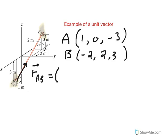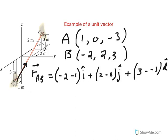Remember, B is the final, A is initial. So that would be, starting with the x, minus 2 minus 1, i. Remember, i is the unit vector along the x-axis. And then similarly for the y, we have 2 minus 0, j. That's the unit vector along the y-axis. And then finally with the z-coordinate, we have final 3 minus negative 3, k. And k is the unit vector along the z-axis. So when you simplify it, the position vector R_AB becomes negative 3i plus 2j plus 6k.